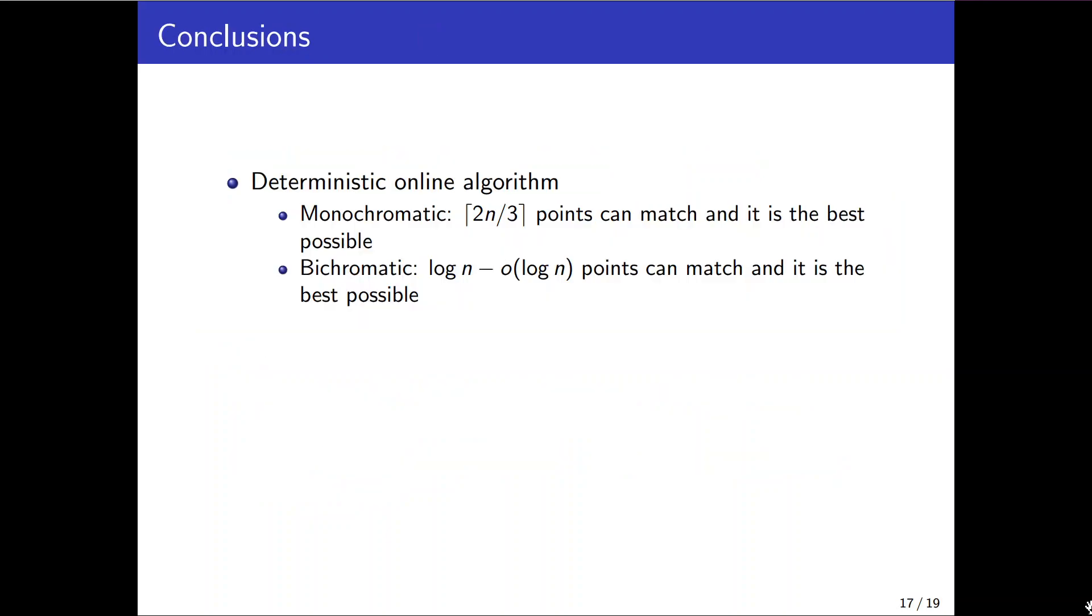In summary now we considered both deterministic online algorithm and online algorithm under the advice setting for monochromatic case and bichromatic one. In monochromatic case the purely online algorithm can match roughly 2/3 points and that is the optimal solution. In bichromatic setting however log n minus o(log n) points can be matched and this is optimal too.